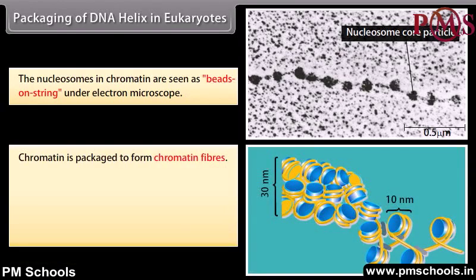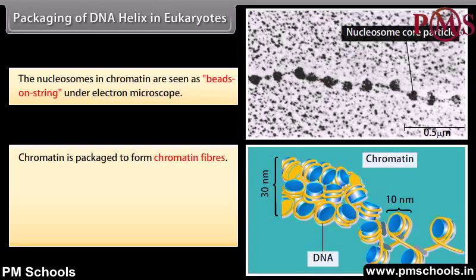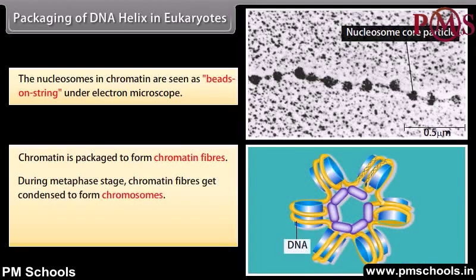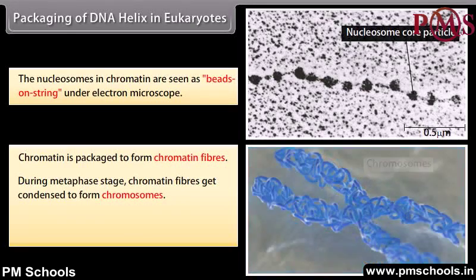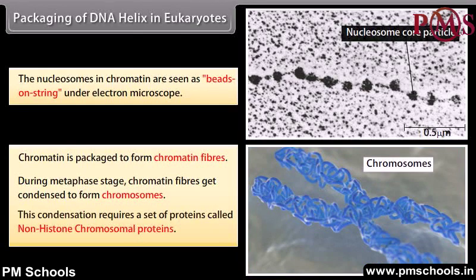Chromatin is packaged to form chromatin fibers. During the metaphase stage, chromatin fibers get condensed to form chromosomes. This condensation requires a set of proteins called non-histone chromosomal proteins.